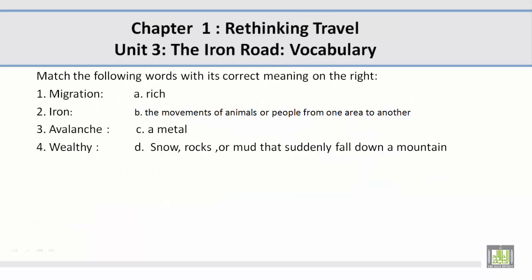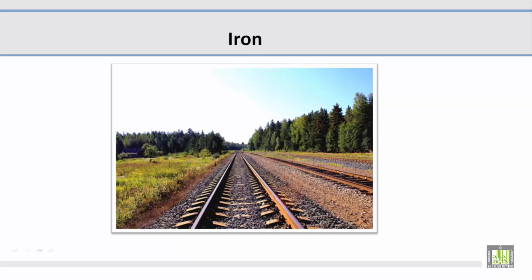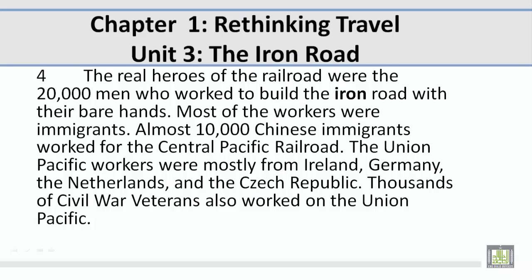Number 2: Iron. Muhammad, please give us the correct answer on the right. C — a metal. Let's take a look at a picture related to the vocabulary word iron. In this picture I see a railroad and it's made of iron — the tracks of the trains — and that's what iron is: a metal. Let's take a look at a paragraph containing the vocabulary word iron. The sentence reads: 'The real heroes of the railroad were the 20,000 men who worked to build the iron road with their bare hands.'